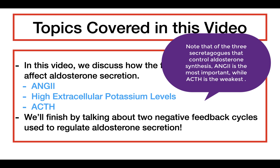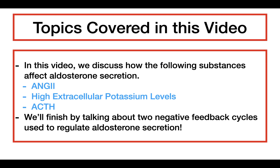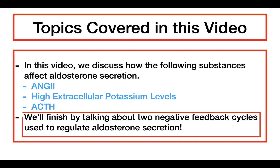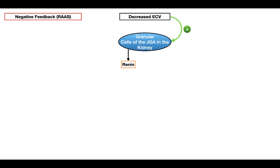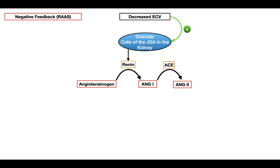We've talked about substances that stimulate aldosterone synthesis, but it's important to be able to turn off aldosterone secretion. This is done through negative feedback cycles. The first negative feedback cycle is seen in the renin-angiotensin-aldosterone system. If we decrease the effective circulating volume, this stimulates the juxtaglomerular apparatus to produce renin, which converts angiotensinogen into angiotensin 1, which is then converted by ACE into angiotensin 2, which stimulates the adrenal gland to produce aldosterone. This is where the negative feedback cycle begins.